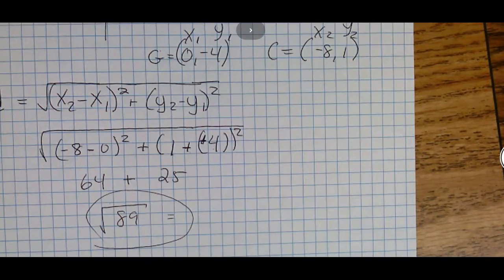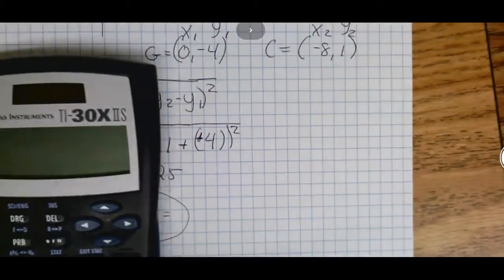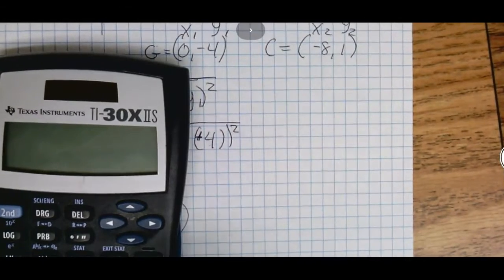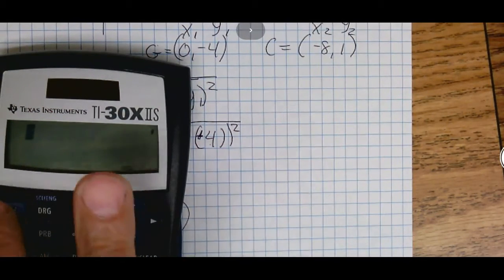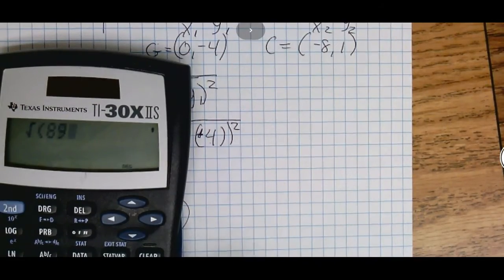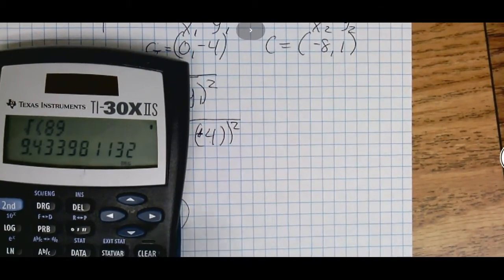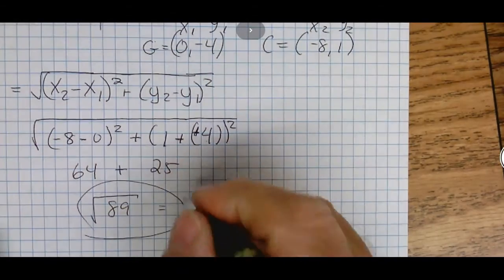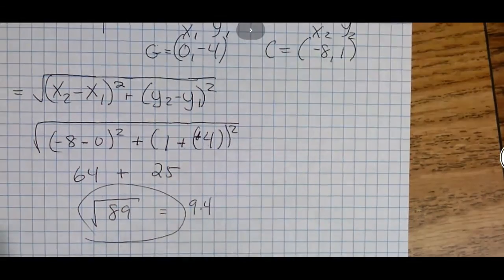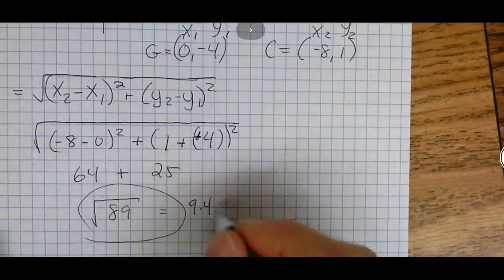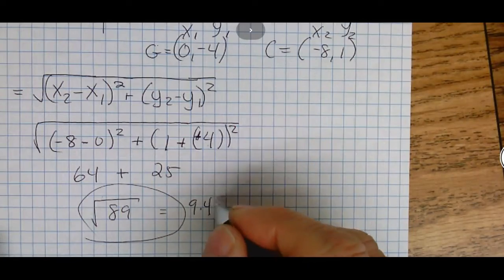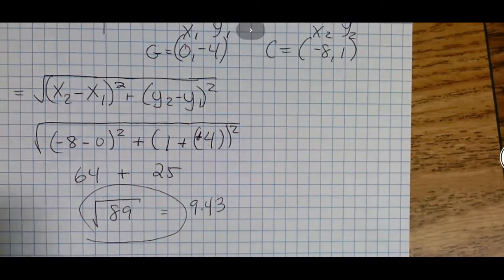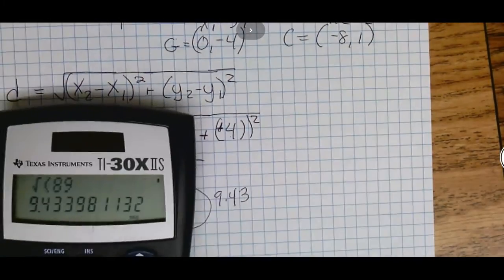We could though, if it's asking for the actual decimal answer, just take the square root of 89 with our calculator. That's the decimal answer: if it's to the tenths it'd be 9.4, and if it was to the hundredths it'd be 9.43.